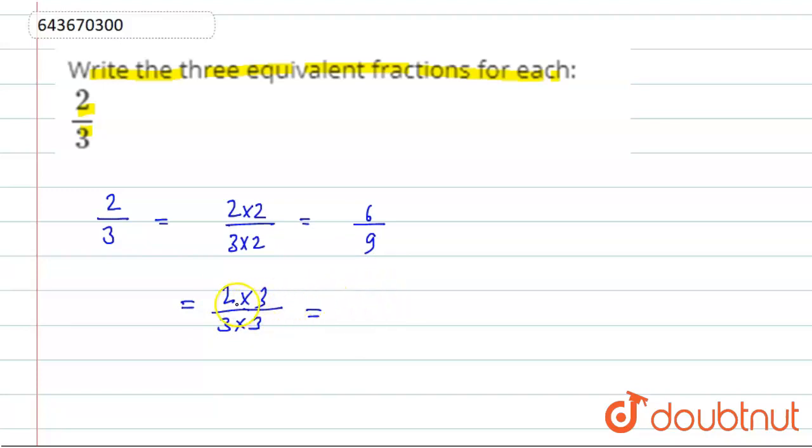Now we multiply 2 in numerator and denominator. This will be equal to 4 by 6. Now again we multiply by 3 in numerator and denominator, so this will be equal to 6 by 9.